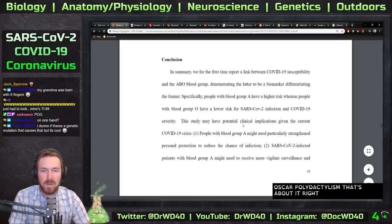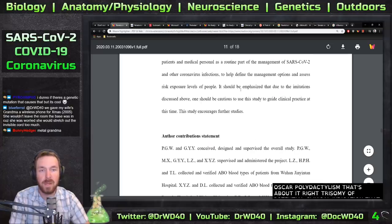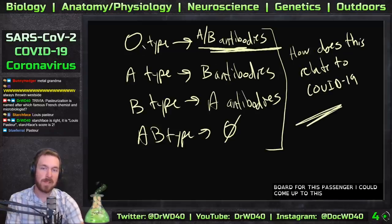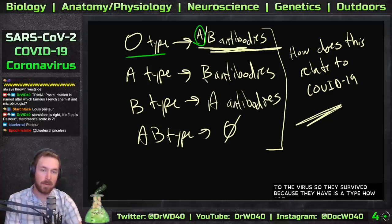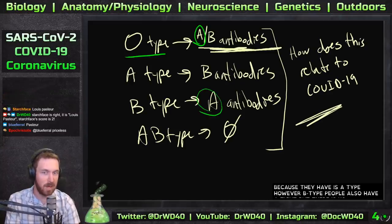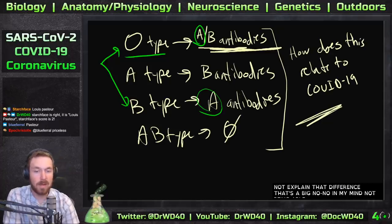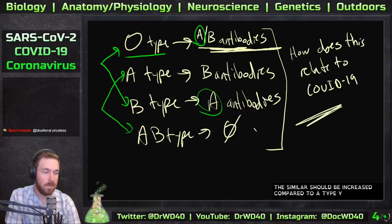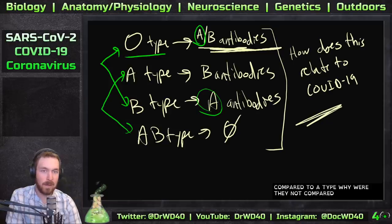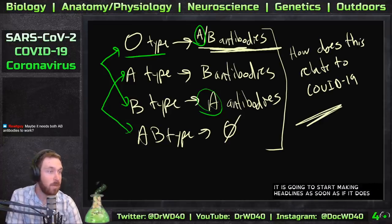This study may have potential clinical implications, but it's too early to make those statements — we need more data. The paper itself says one should be cautious about using this study to guide clinical practice. AB type, which also lacks anti-A antibodies, should show increased susceptibility similar to A type — but that comparison wasn't made clearly. The paper doesn't explain the B type inconsistency, which is a big problem for me. I wanted to discuss this paper tonight because it's going to start making headlines once it gets through preprint and is actually published.